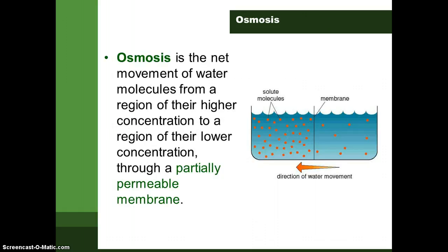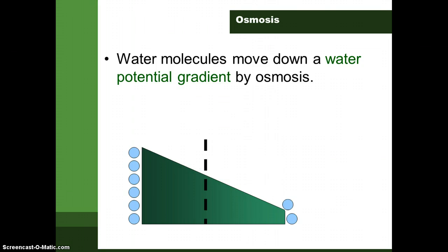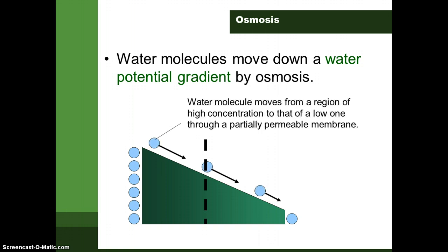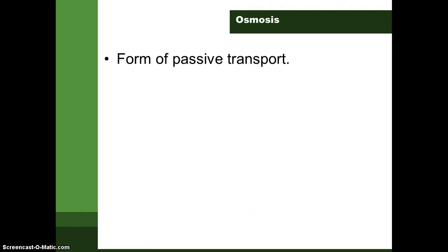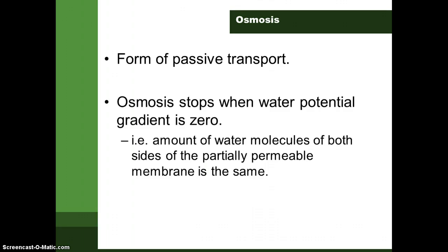Now let's take a look at osmosis, which is slightly different from diffusion. Osmosis is the net movement of water molecules from a region of higher water potential to a region of lower water potential through a partially permeable membrane. Osmosis is also a form of passive transport, and it stops when the water potential gradient is zero — that is, when the water potential on both sides of the partially permeable membrane becomes the same.